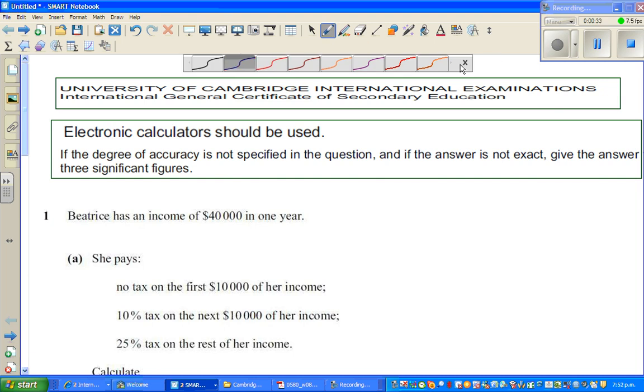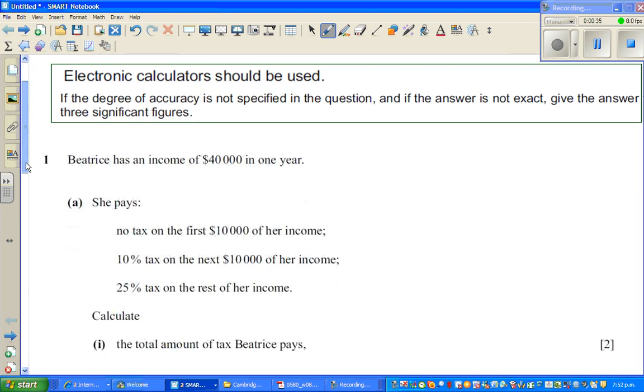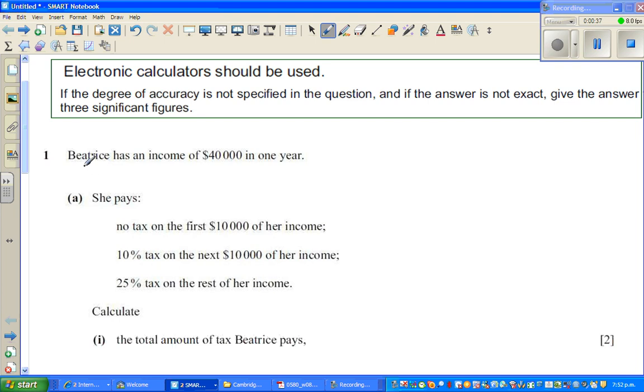Let's read the question. Beatrice has an income of $40,000 in one year. She pays no tax on the first $10,000 of her income. Then she pays 10% tax on the next $10,000 and 25% on the rest of her income.